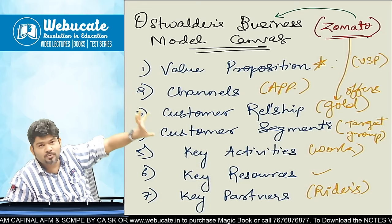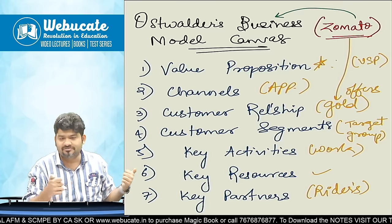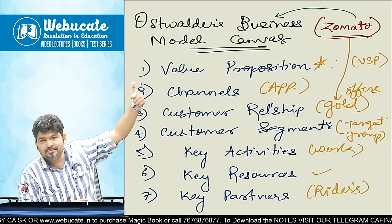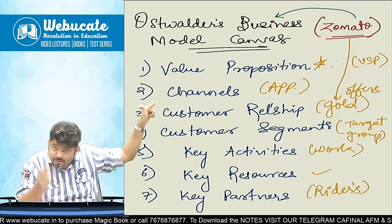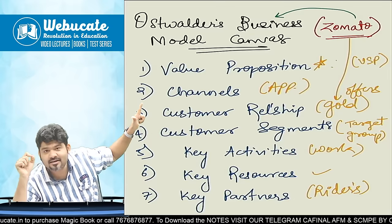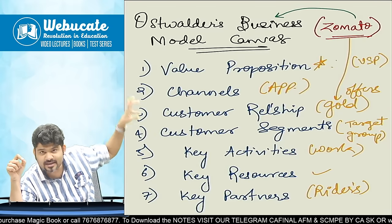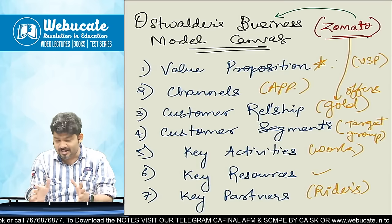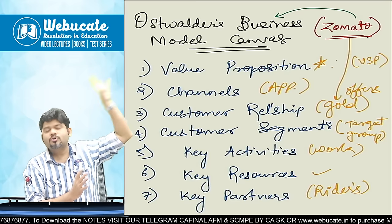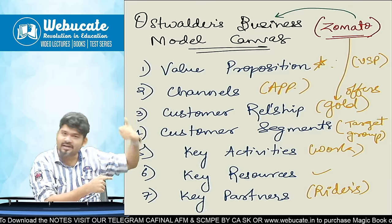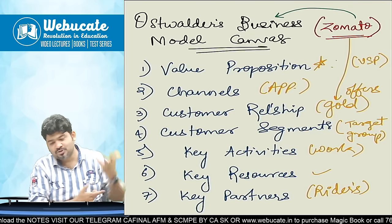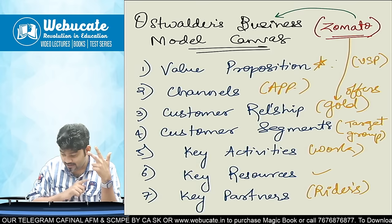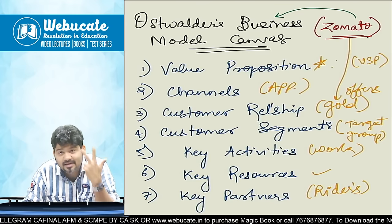Ola-Uber ka jaise USP hai — that anywhere sitting, you can just order for Ola-Uber and you can reach at whatever time you want. So value proposition, then connect hua channels — how are you going to reach to the customer? Usko bolte hain channel. Customer relationship, customer segment kya hai — aapke yeh sab identify karna hai. Agar yeh 9 ki 9 cheezein identify kar li, means your business model is in place. Jisko naam diya gaya Osterwalder's Business Model Canvas — because Osterwalder karke banda tha, usne is cheez ko work out kiya.